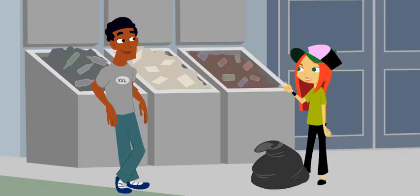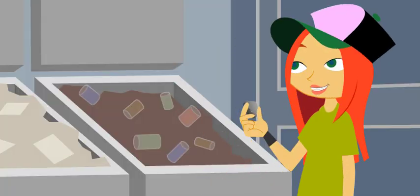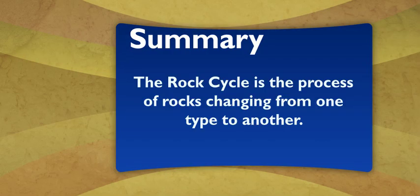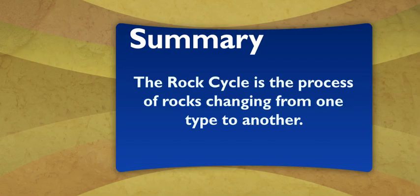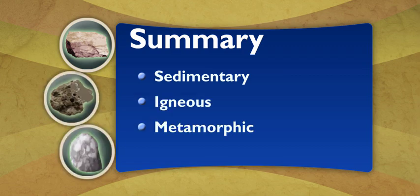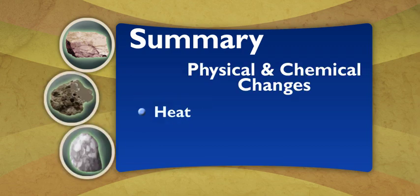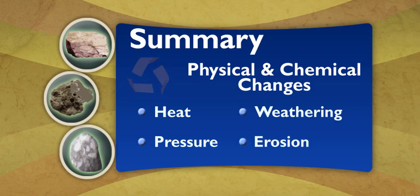So, I think I get it. The rock cycle is the process of rocks changing from one type to another. There are three different types of rocks: sedimentary, igneous, and metamorphic. Physical and chemical changes, like heat, pressure, weathering, and erosion, all help change rocks from one type to another.